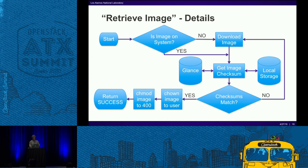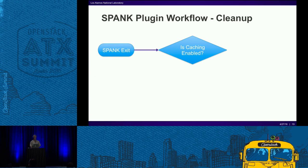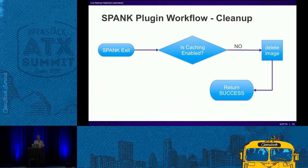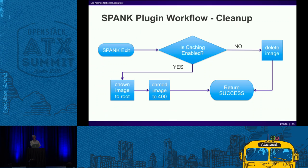For cleanup: spank exit gets called when the user's job returns. We check if caching is enabled. If it's not, we delete the image and we're done. If caching is enabled, we chown the image back to root and chmod it back to 400 — the user could have changed permissions during their job. We make sure no one else can access the image until another authorized job comes along.